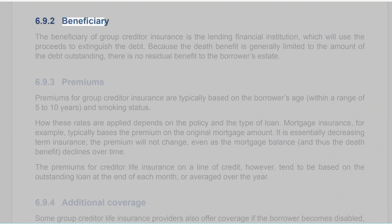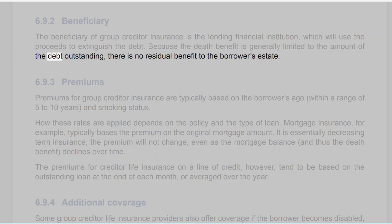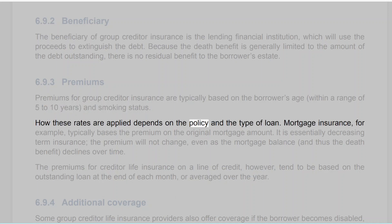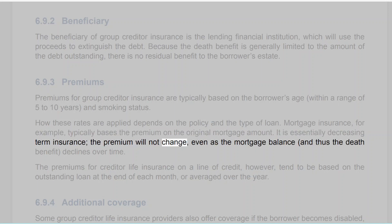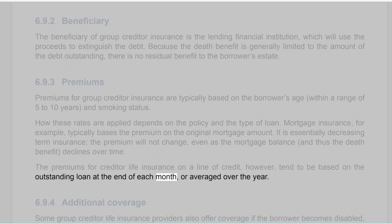6.9.2 Beneficiary. The beneficiary of group creditor insurance is the lending financial institution, which will use the proceeds to extinguish the debt. Because the death benefit is generally limited to the amount of the debt outstanding, there is no residual benefit to the borrower's estate. 6.9.3 Premiums. Premiums for group creditor insurance are typically based on the borrower's age within a range of 5 to 10 years and smoking status. Mortgage insurance typically bases the premium on the original mortgage amount — it is essentially decreasing term insurance where the premium will not change even as the mortgage balance and thus the death benefit declines. Premiums for creditor life insurance on a line of credit tend to be based on the outstanding loan at the end of each month or averaged over the year.